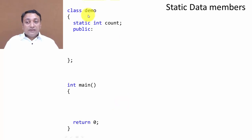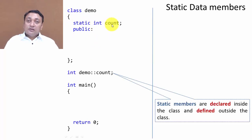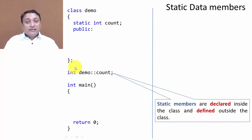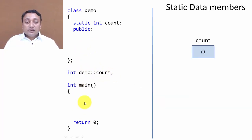Here we have class demo, inside which we have created one static variable called count. We have just declared the variable count inside the class. We need to define the static variable outside the class at the global region. To define it, write the data type, then class name, then scope resolution operator, then the variable name. So static members are declared inside the class and defined outside the class.